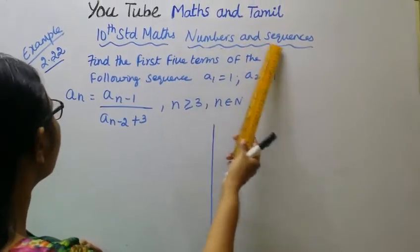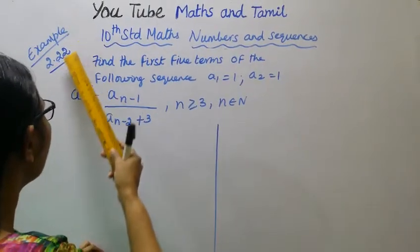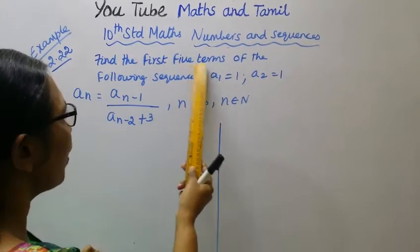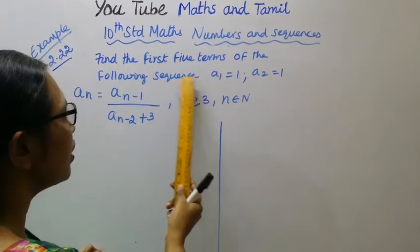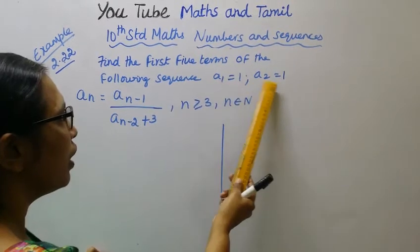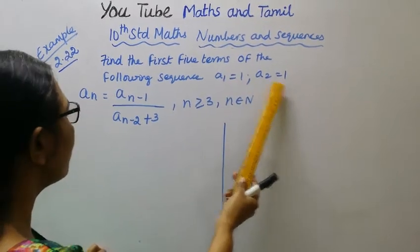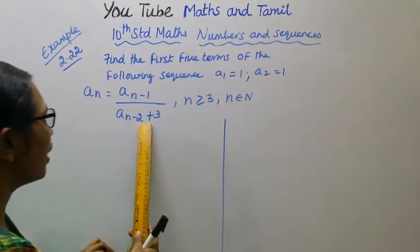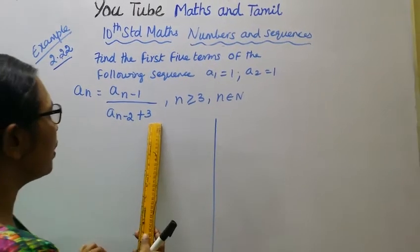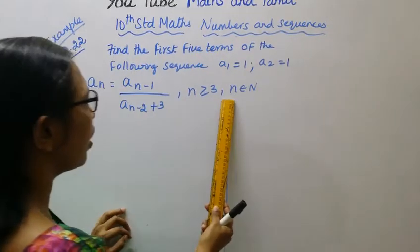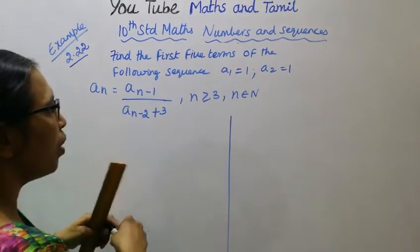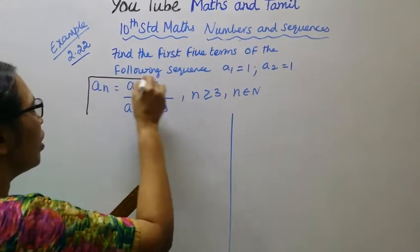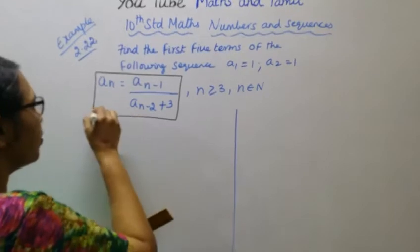Numbers and Sequences, Example 2.22: Find the first 5 terms of the following sequence. a1 equal to 1, a2 equal to 1, aN equal to a(N-1) divided by a(N-2) plus 3, where n is greater than or equal to 3, n belongs to N.